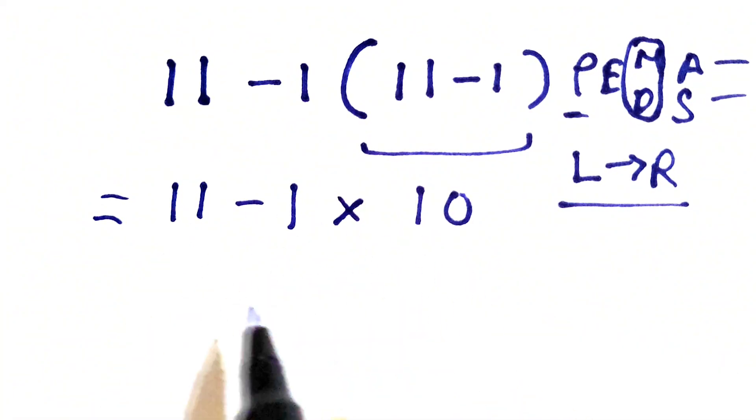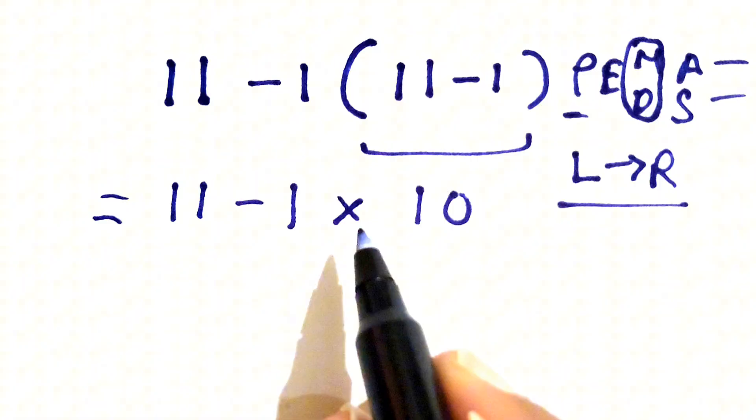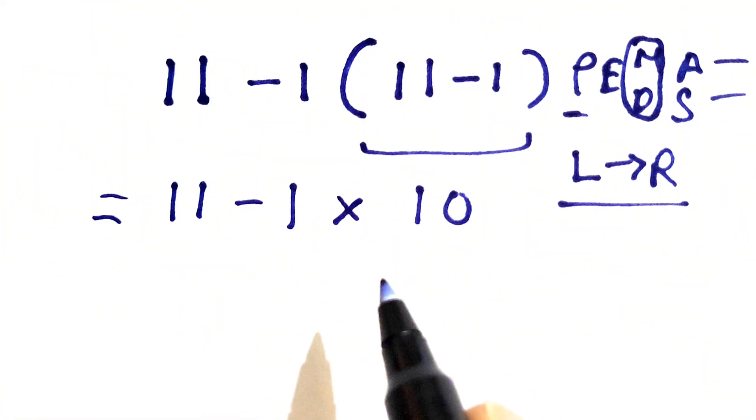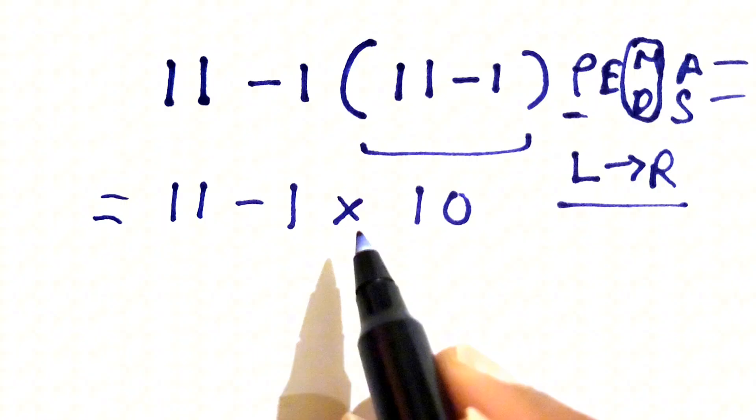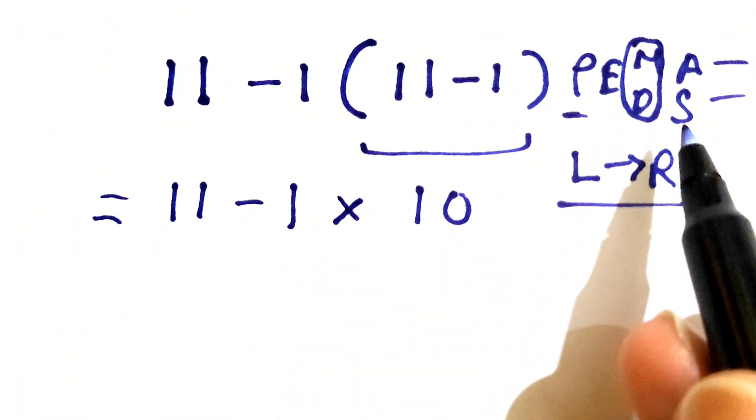Now we have the expression like this. We have subtraction and multiplication, so in this first we need to solve the multiplication because the priority of multiplication is greater than subtraction.